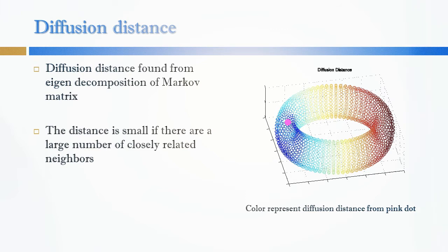Diffusion distance is found from the eigen decomposition of a Markov matrix. The distance is small if there's a large number of closely related neighbors.